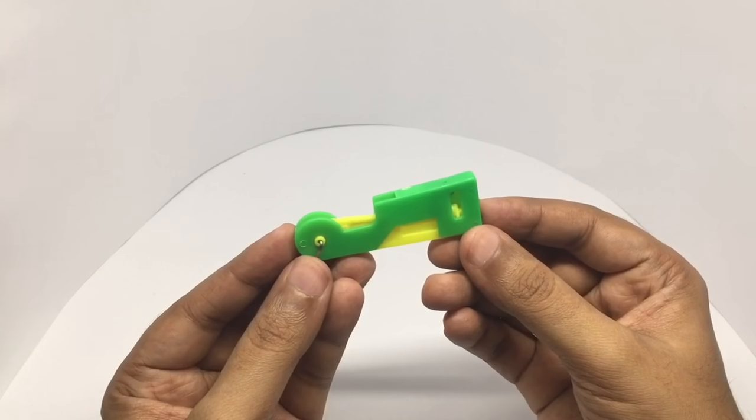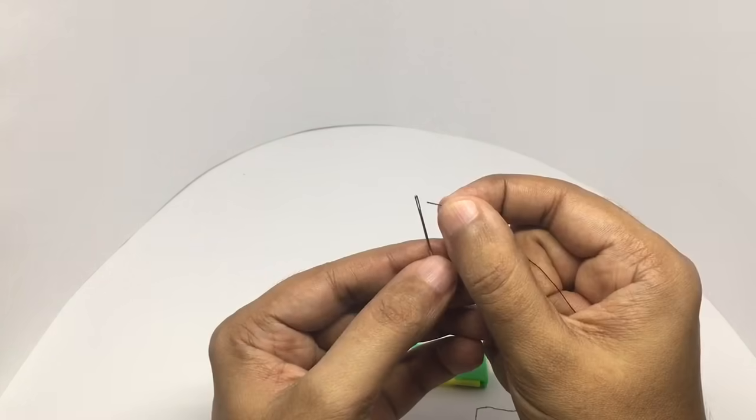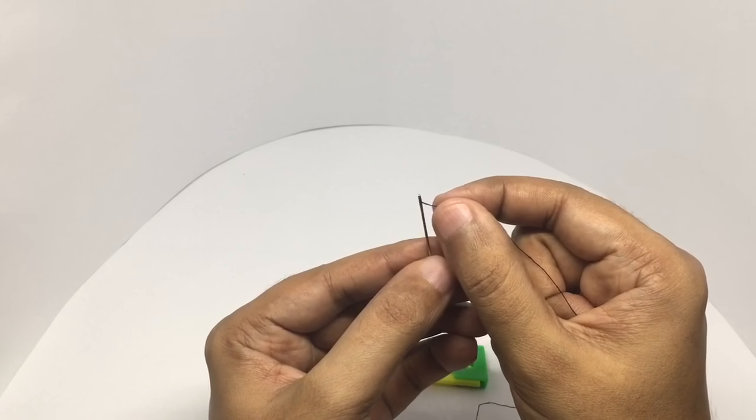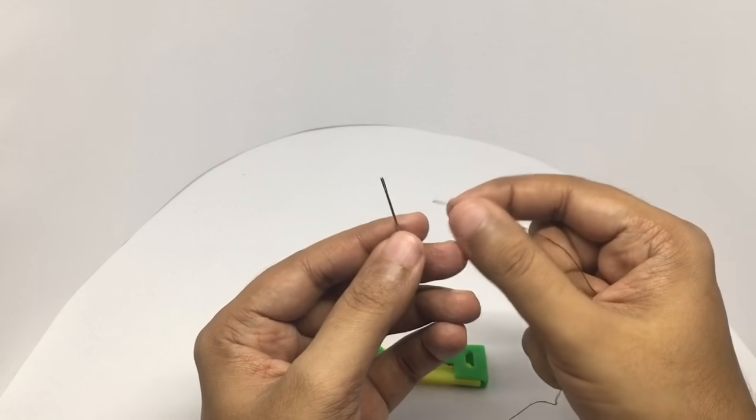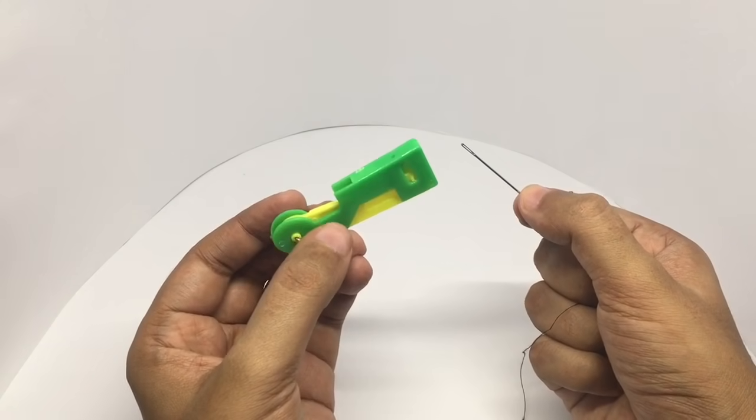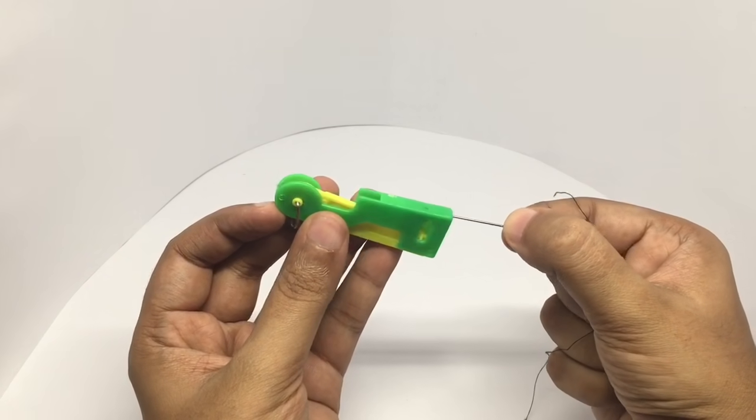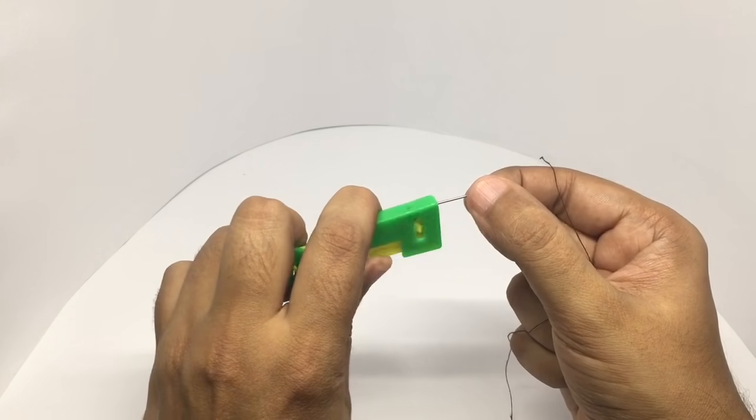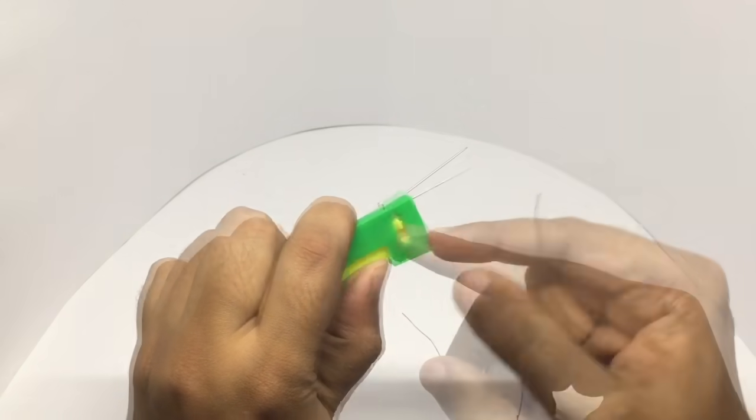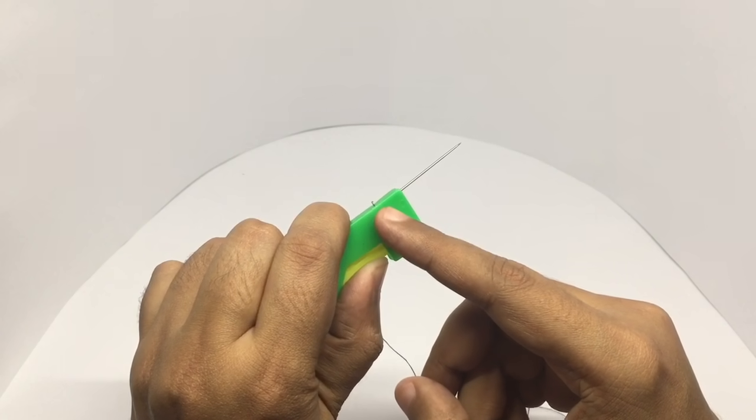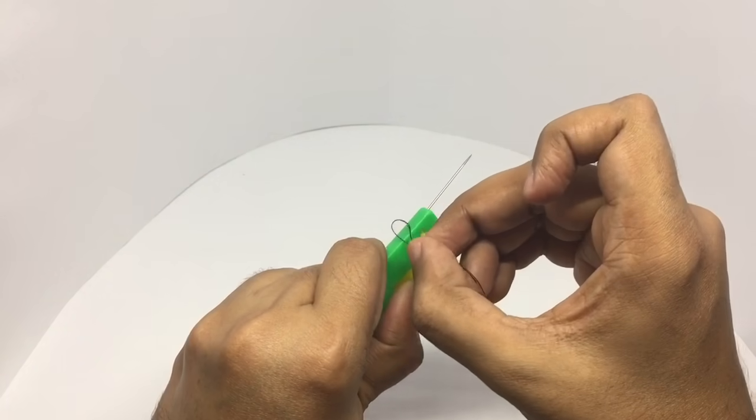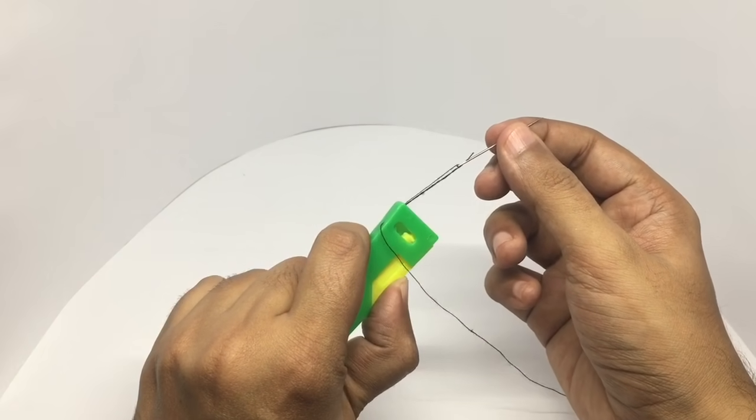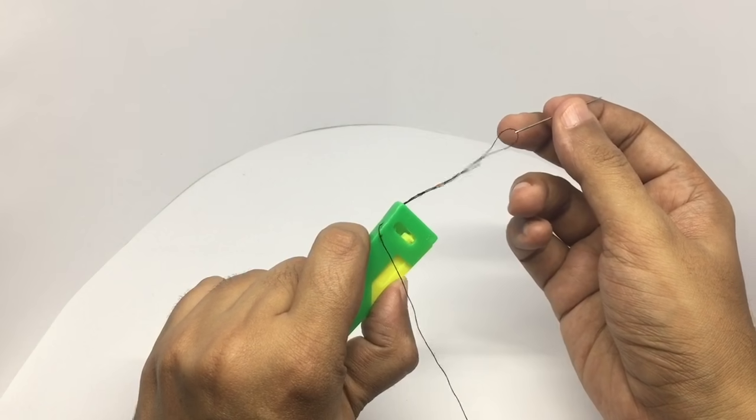This will help you thread needles very easily. Trying to thread the needle like this takes time and it's really hard if your vision is quite bad. That's where this comes in handy. All you need to do is put the needle in here, press the handle. You can see a small pin popping out with a hook on it. Pull the needle out and it should be threaded.